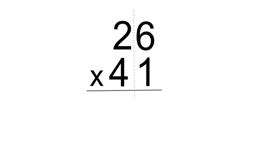We're going to multiply the number at the bottom with that at the top. So in this example, 41 will be multiplied by 26. We're going to start with the units digit of 41, that is the 1. You will multiply this digit 1 with the number 26 above, starting with the units first — so multiply 1 by 6 — then move on to the tens digit, so multiply 1 by 2.